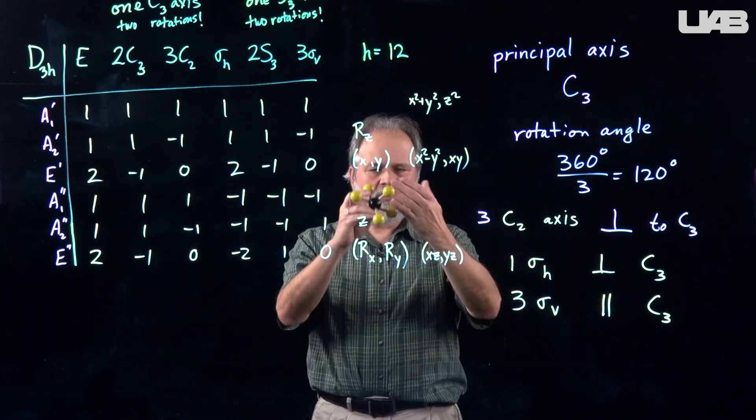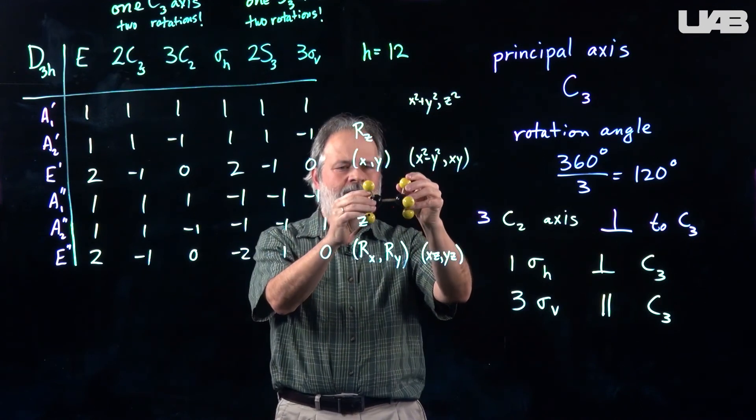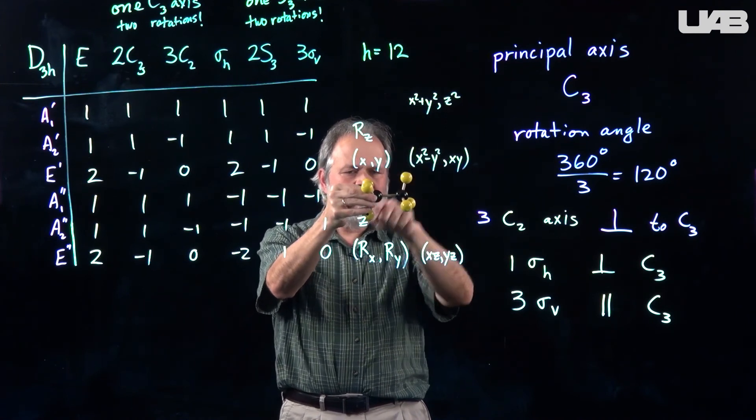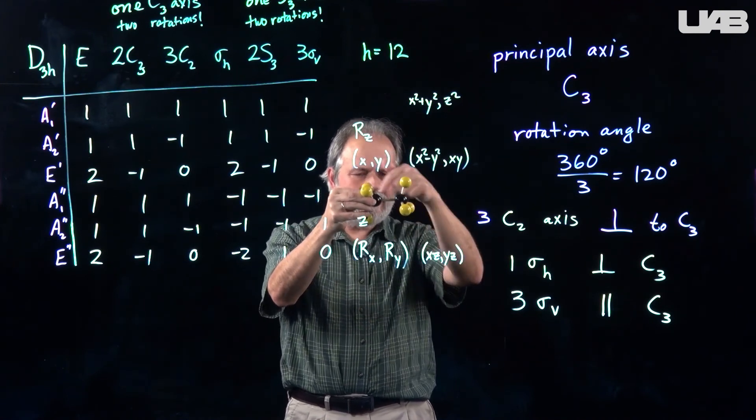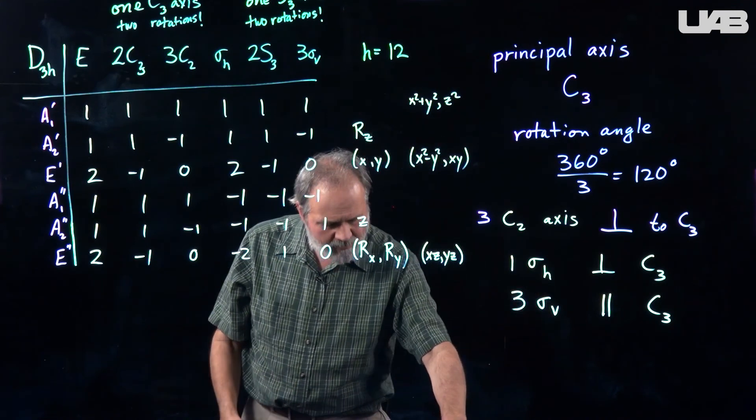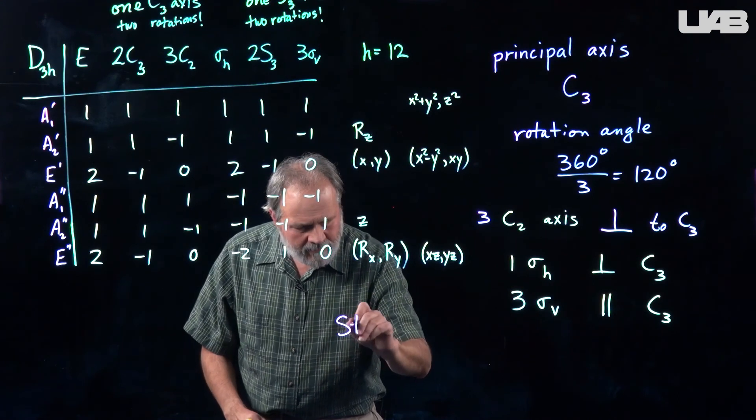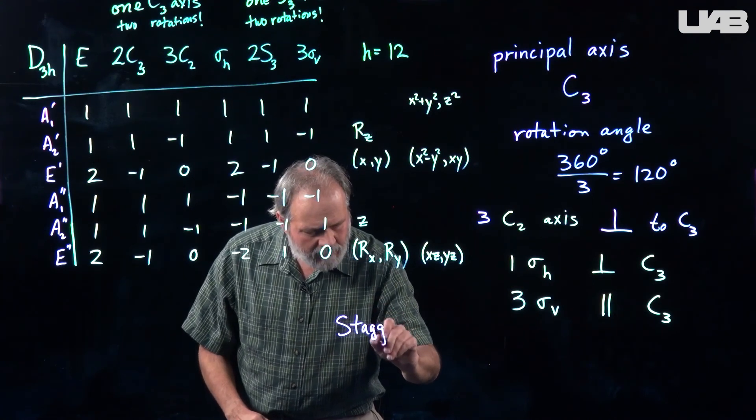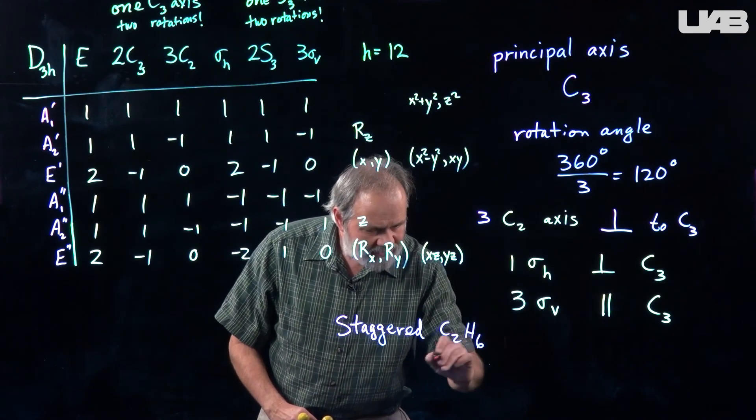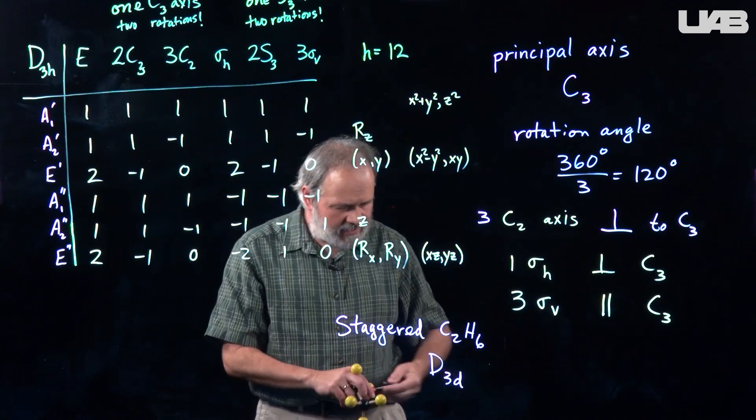And so, there is no horizontal plane because the front half does not look like the back half anymore. When you look at the hydrogens here, instead of being across from each other, they are anti and gauche to each other. So, there is no sigma H. And so, you go through the flow chart. And so, staggered ethane is D3D. So, instead of D3H, it's D3D.